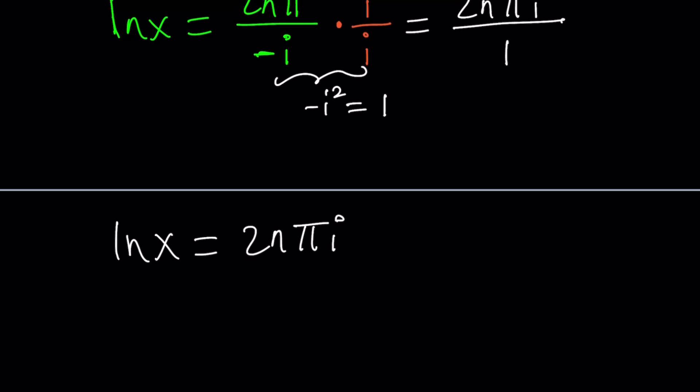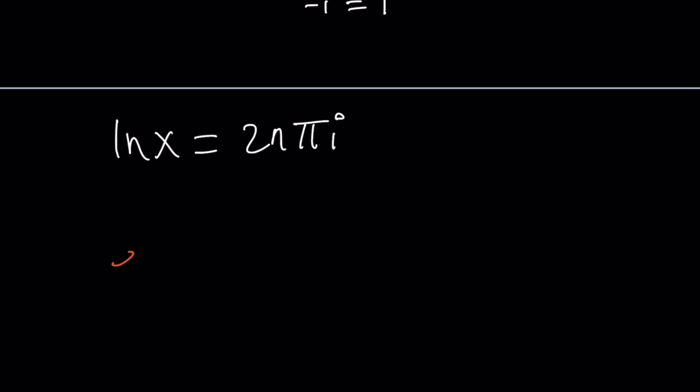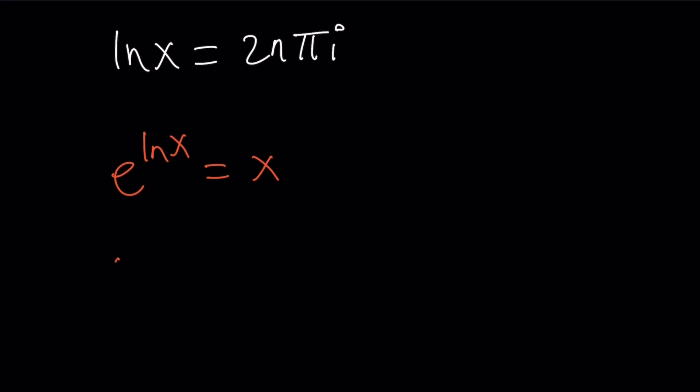Now, to get x from here, we would need to do what? e to the power of both sides, right? Because we do know, hopefully we do, that e to the power ln(x) equals x. So if you want x, you need to do e to the power ln(x), but you need to do e to the power on both sides.